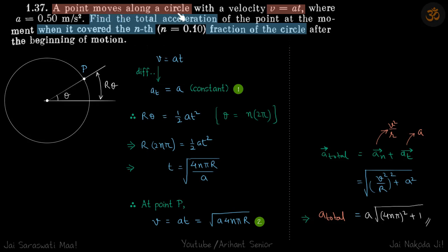A point moves along a circular path with velocity v = at, where a = 0.50 m/s². We need to find the total acceleration when it's covered the nth fraction (n = 0.10) of the circle.